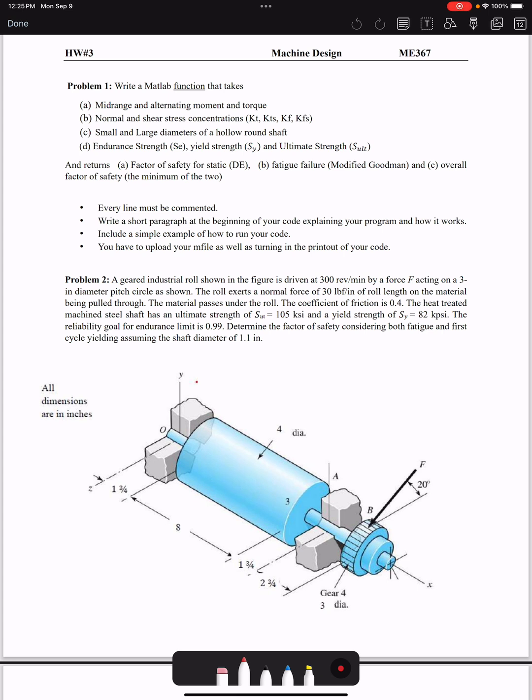So MM, MA, TM, TA would be our first set of inputs. Then the normal and shear stress concentration. Here we're just going to take the stress concentration as inputs.